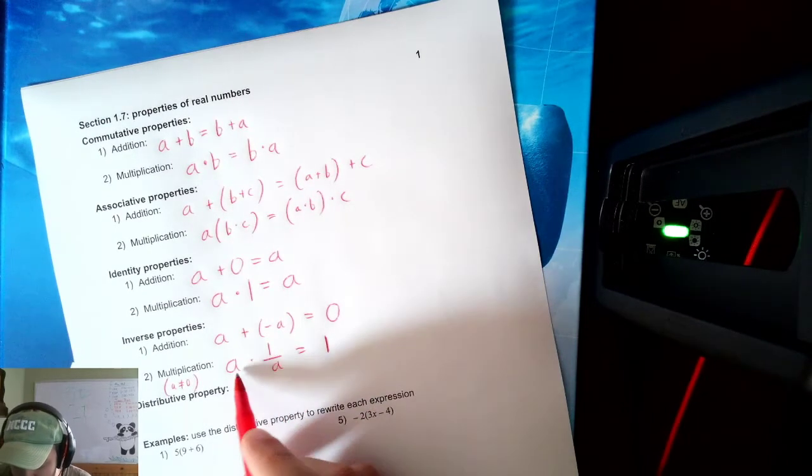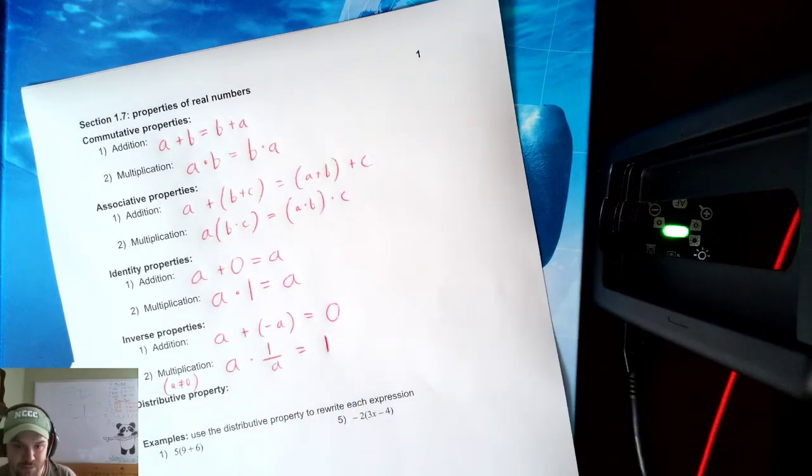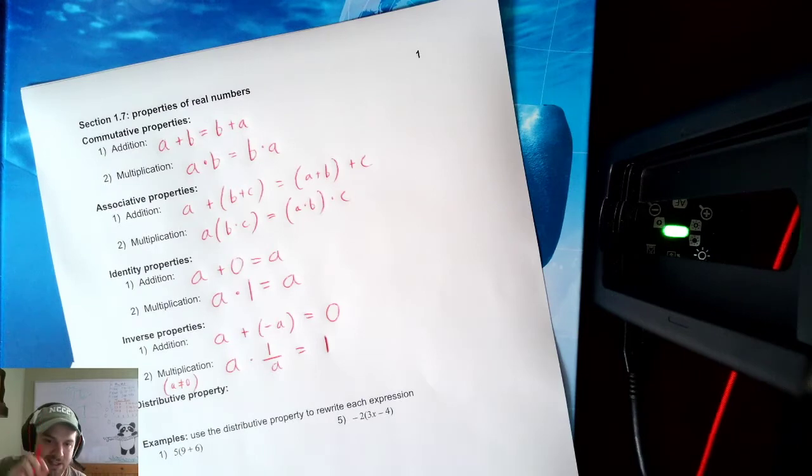Because I can't have 0 in the bottom here. So you can't have 0 for the multiplication property. That's the only small caveat.